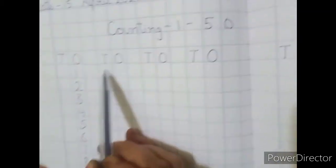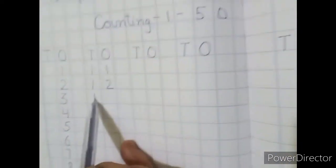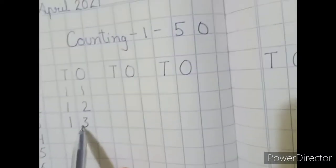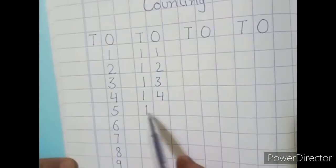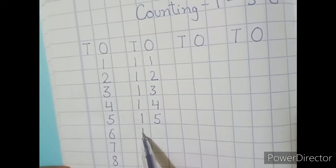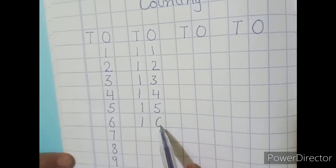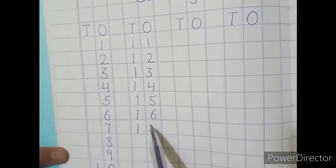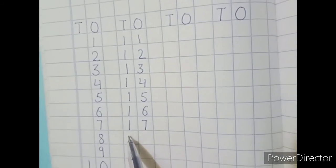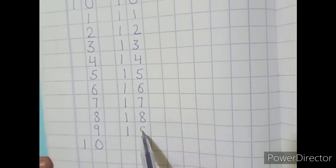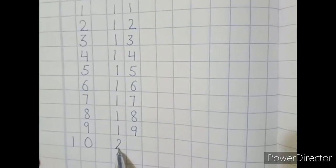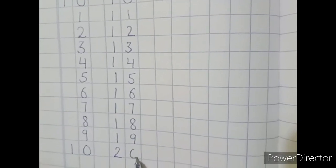Now write 11. Then: 1-2 is 12, 1-3 is 13, 1-4 is 14, 1-5 is 15, 1-6 is 16, 1-7 is 17, 1-8 is 18, 1-9 is 19, and 2-0 is 20.